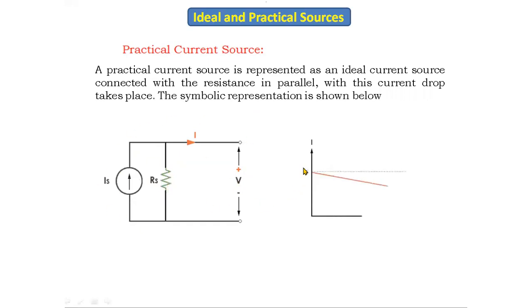If you see the characteristics of the practical current source: if you increase the voltage continuously, there is a change in the current — there is a drop in the current because of the resistor connected in parallel. That's why it is called a practical current source. In the practical current source, there is a current drop because of this resistor. The internal resistor is connected in parallel with the current source.